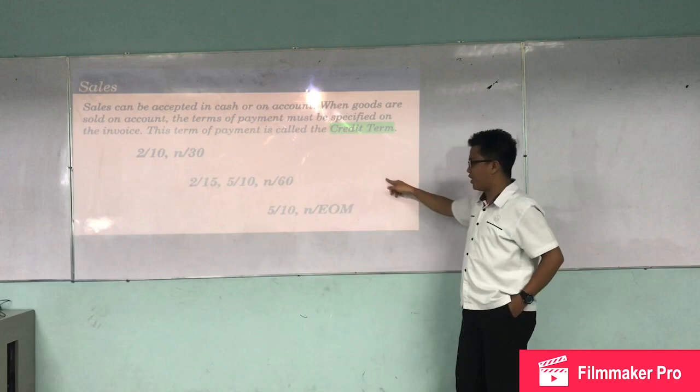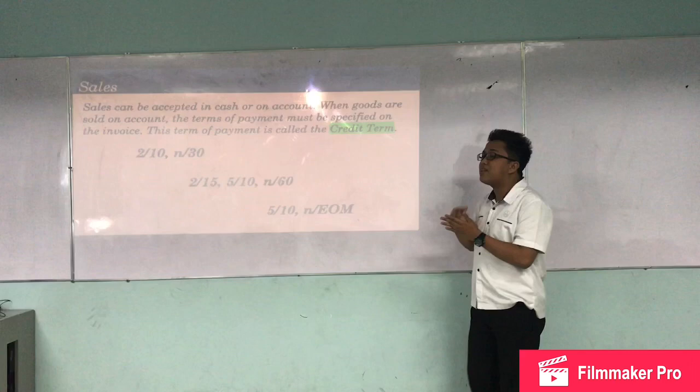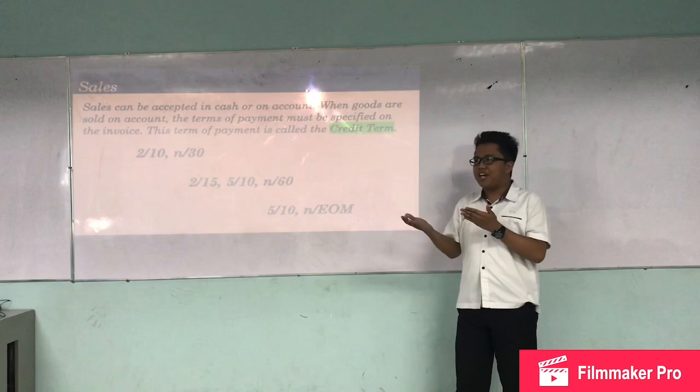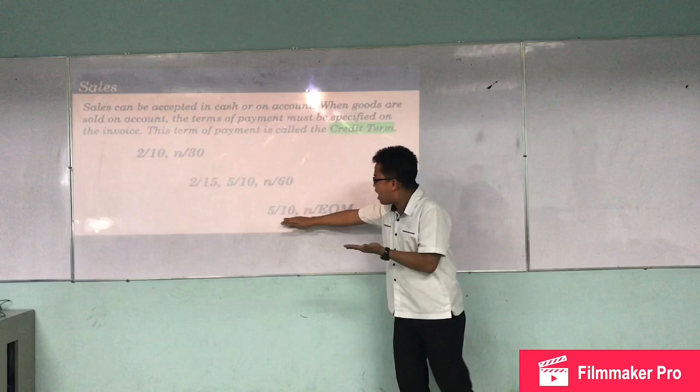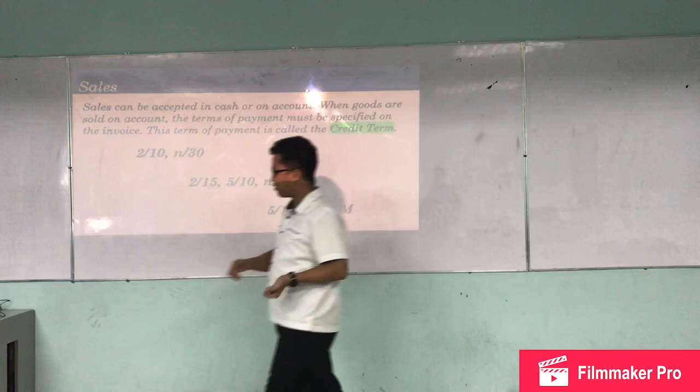Another example of credit terms is end-of-month billing. If you purchase a product on June 15 and pay within 10 days before the end of the month, you receive a 5 percent discount.